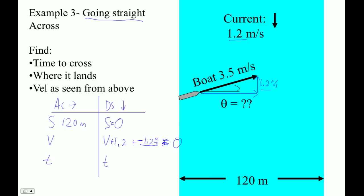So now we've got a triangle, and we know this side is 1.2 meters per second so that it perfectly counteracts the current. This component is 1.2 upstream; the current is 1.2 downstream. And that's all you have to wrap your mind around. Now it's just simple trigonometry. The Pythagorean theorem gives us the adjacent side: square root of 3.5 squared minus 1.2 squared equals 3.285 meters per second.